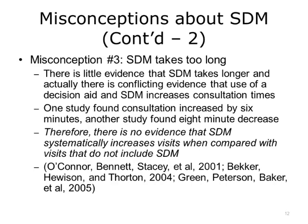A third misconception about shared decision-making is that it just takes much too long. There is little evidence to prove this. Although visit length may vary depending on the context, no one has proven that shared decision-making systematically takes longer than visits that do not include SDM. With respect to patient decision aids, trials cited in the Cochrane Database of Systematic Reviews found conflicting evidence: one study found consultations increased by six minutes when a decision aid and SDM were used, while another found interaction time was eight minutes shorter when similar techniques were used. Therefore, there is no evidence that SDM systematically increases visit time.